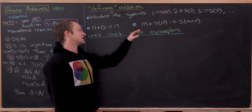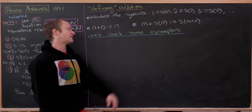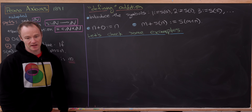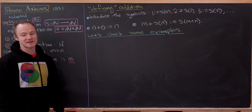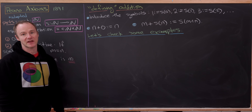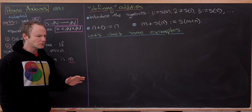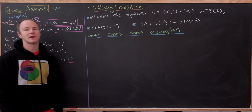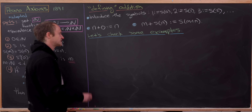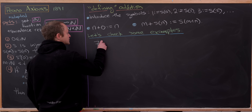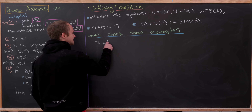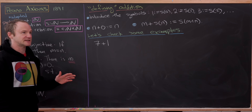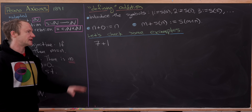Recursively, we define the rest of addition by the formula: M plus S(N) is defined to be S(M plus N). Let's make sure this makes sense by doing a couple of simple calculations. For instance, let's start with 7 plus 1, which should obviously equal 8.